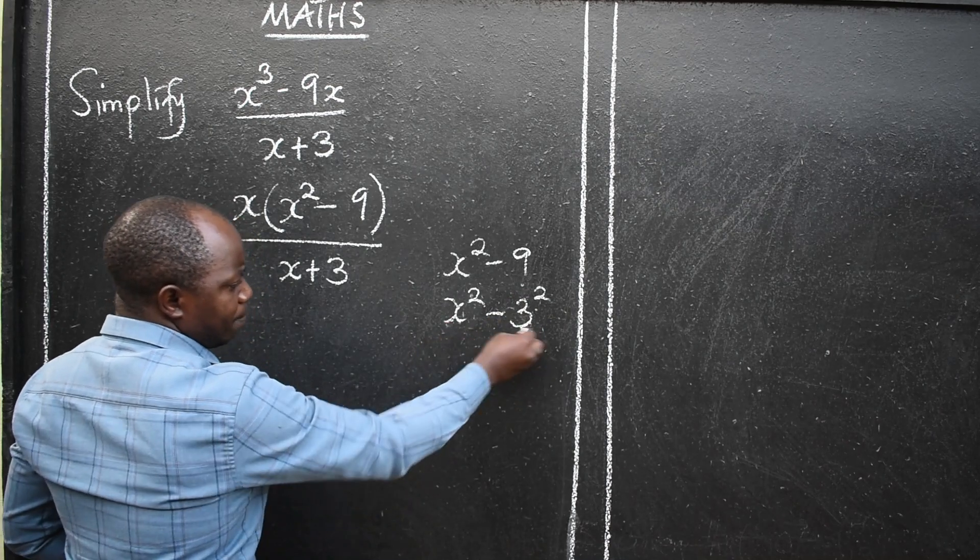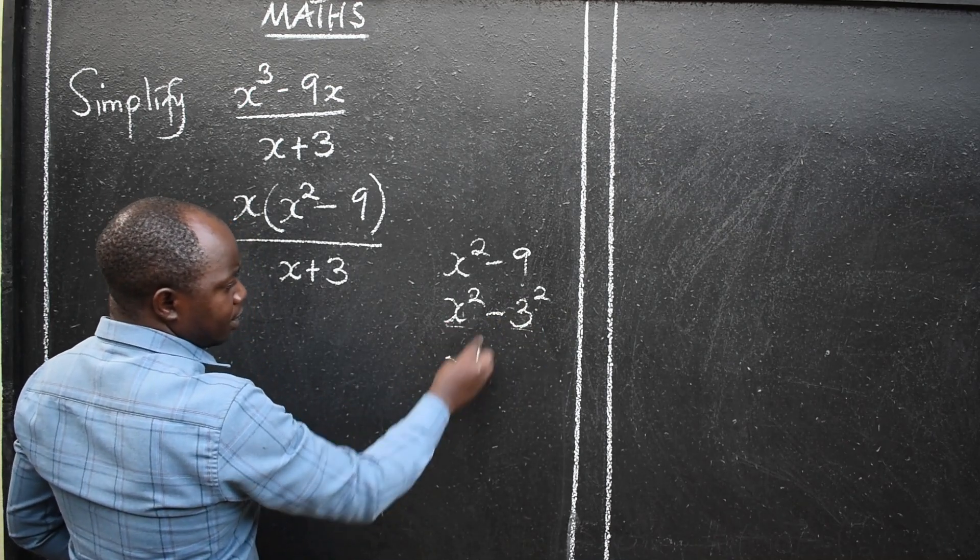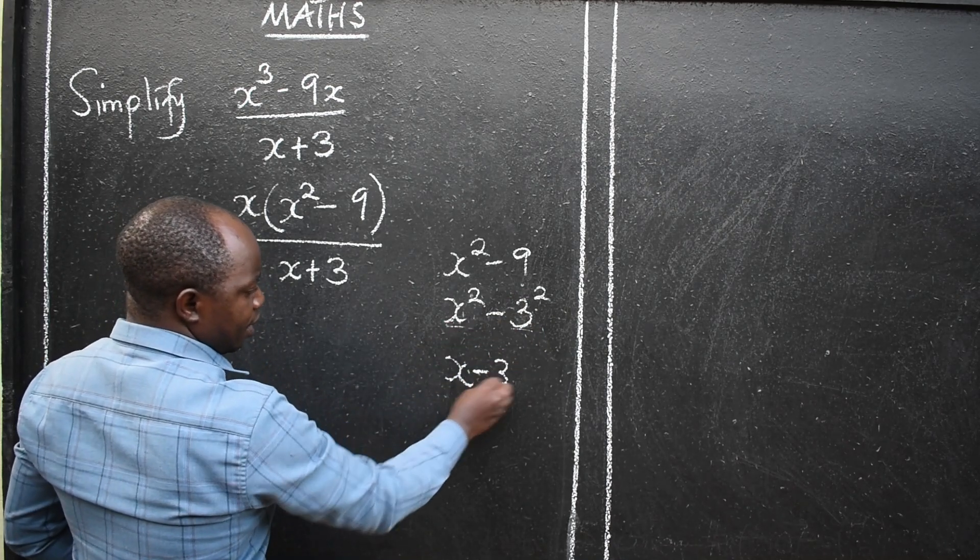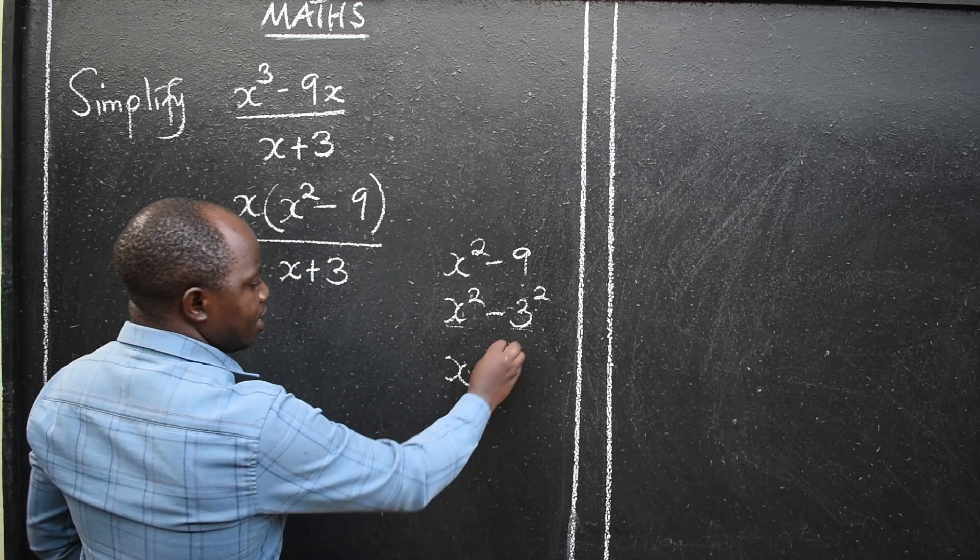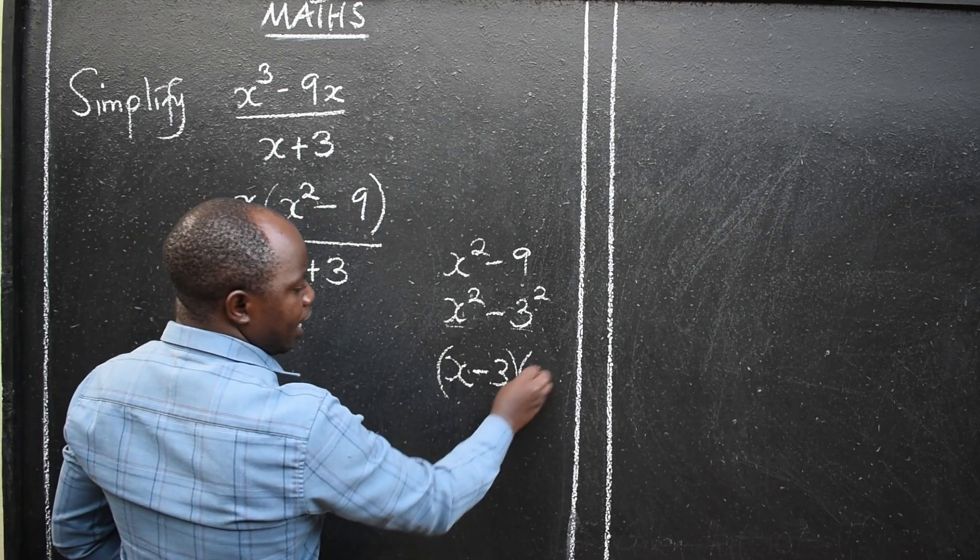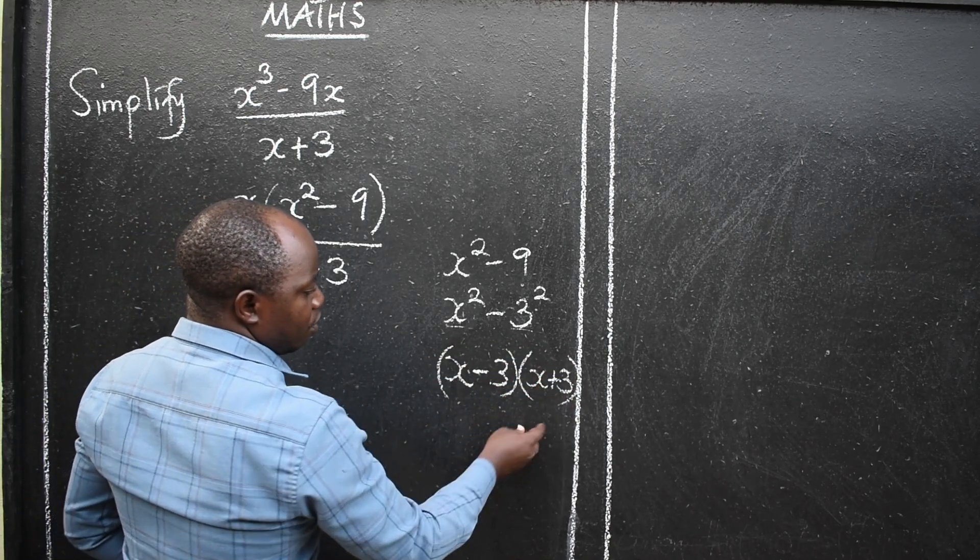You will denote the squares, just write the bases. So it will be x minus 3. I see that. Then the other pair will be x plus 3. You are factorized.